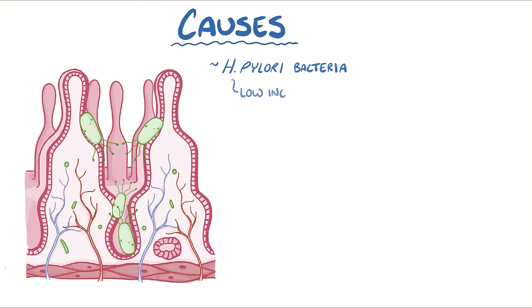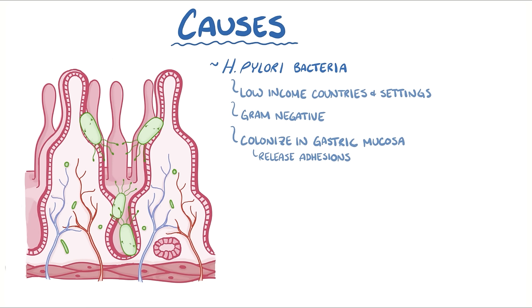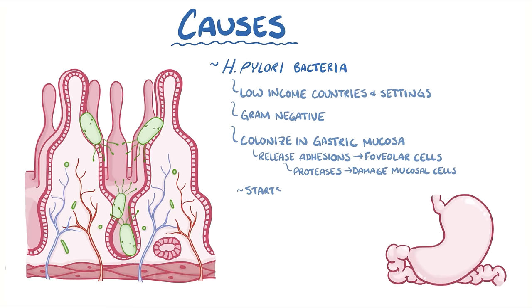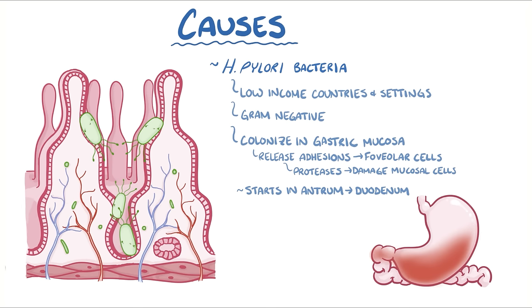The main cause of gastric and duodenal ulcers is infection with H. pylori bacteria, especially in low-income countries and settings. H. pylori are gram-negative bacteria that colonize the gastric mucosa and release adhesins that help them adhere to gastric foveolar cells, as well as proteases that cause damage to mucosal cells. The majority of individuals with H. pylori don't develop any problems, but sometimes it causes a patchy pattern of damage that starts in the antrum and spreads to the rest of the stomach and eventually into the duodenum. Over time, the damage erodes deeper and deeper into the mucosa, eventually causing ulcers.